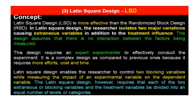Latin square design enables the researcher to control two blocking variables while measuring the impact of an experimental variable on the dependent variable. However, it requires that each of the two extraneous or blocking variables and the treatment variables be divided into an equal number of levels or categories.